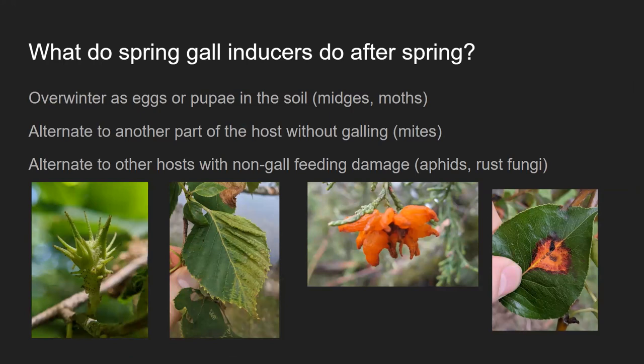If you're a spring inducer, what happens at the end of that spring period when your growth is finished and you're mature? You have a whole year to survive until the next spring. Some, like those grape moths, just drop into the soil, pupate, and take their chances as a pupa in the soil. Some will lay eggs in crevices or hidden places. But at least a few different lineages have evolved the strategy of creating a second distinct host relationship.